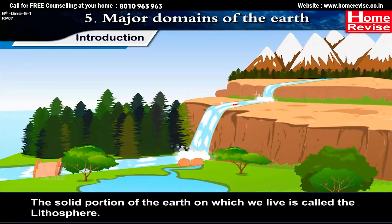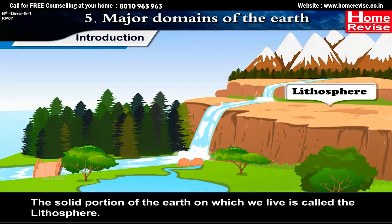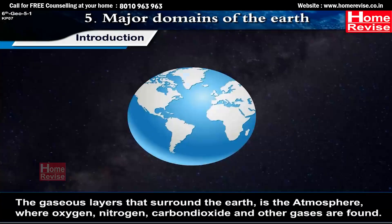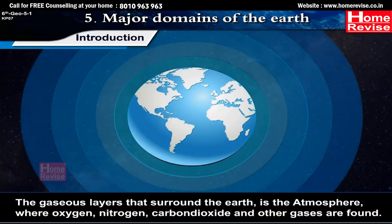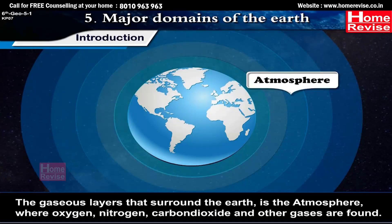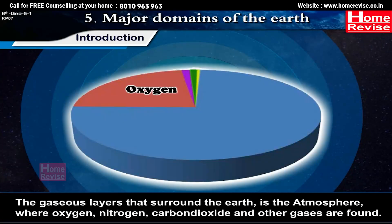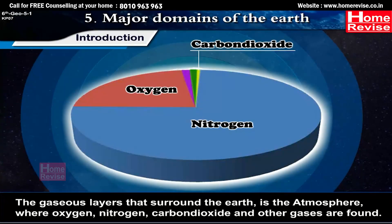The solid portion of the Earth on which we live is called the Lithosphere. The gaseous layers that surround the Earth is the Atmosphere, where Oxygen, Nitrogen, Carbon Dioxide and other gases are found.